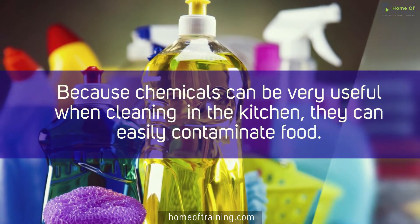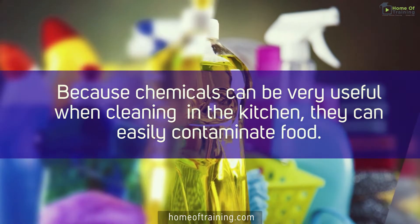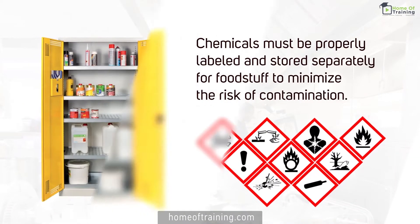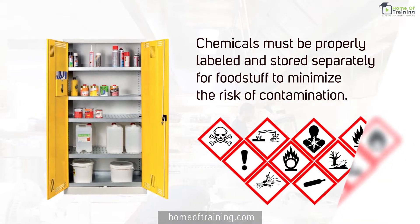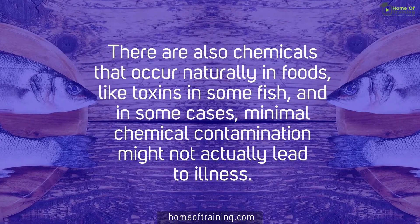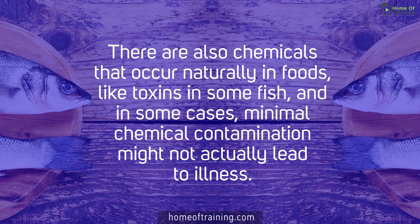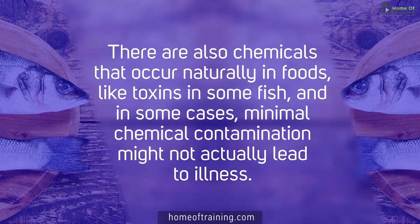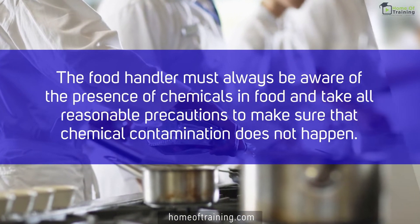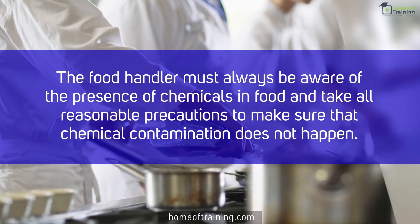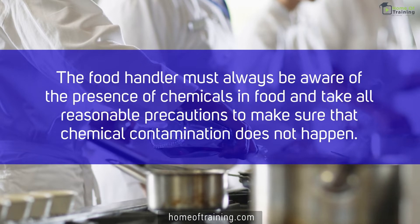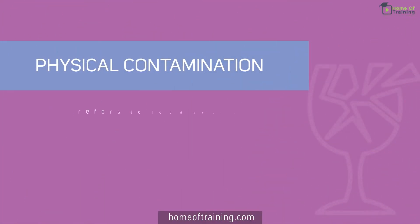Chemical contamination refers to food that has been contaminated by some type of chemical substance. Because chemicals can be very useful when cleaning in the kitchen, they can easily contaminate food. Chemicals must be properly labeled and stored separately from foodstuff to minimize the risk of contamination. There are also chemicals that occur naturally in foods, like toxins in some fish. In some cases, minimal chemical contamination might not actually lead to illness; however, the food handler must always be aware of the presence of chemicals in food and take all reasonable precautions.